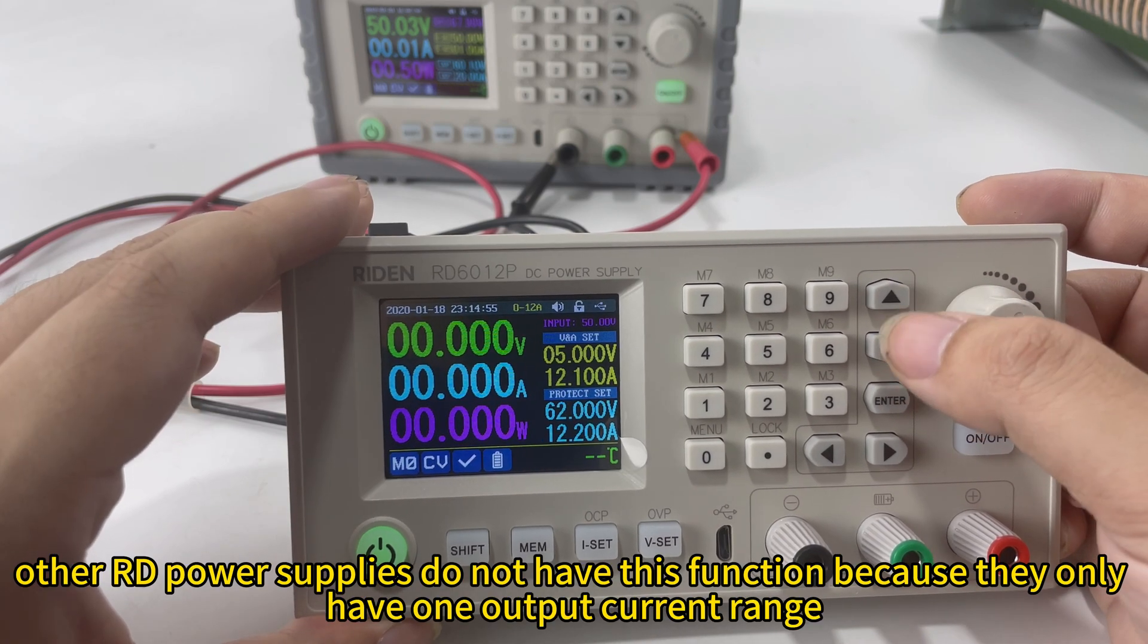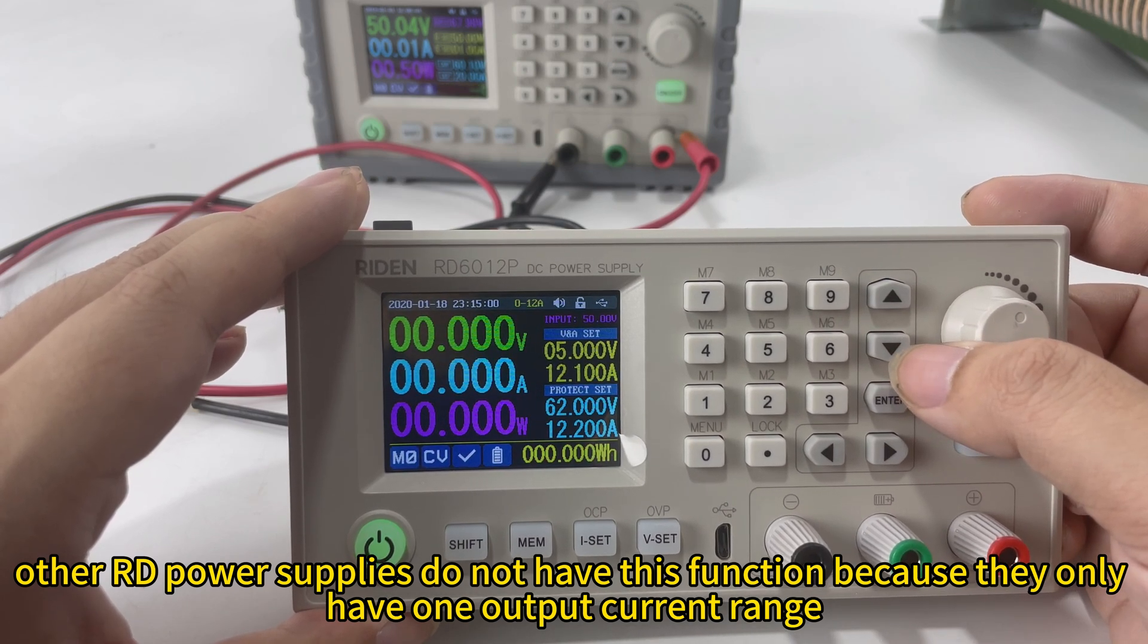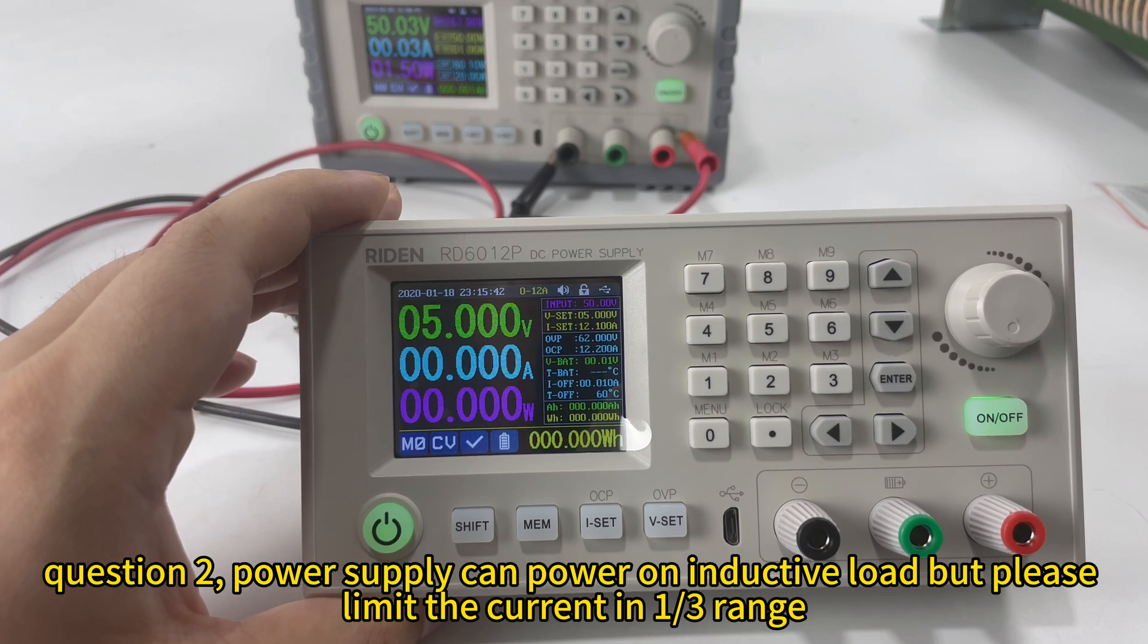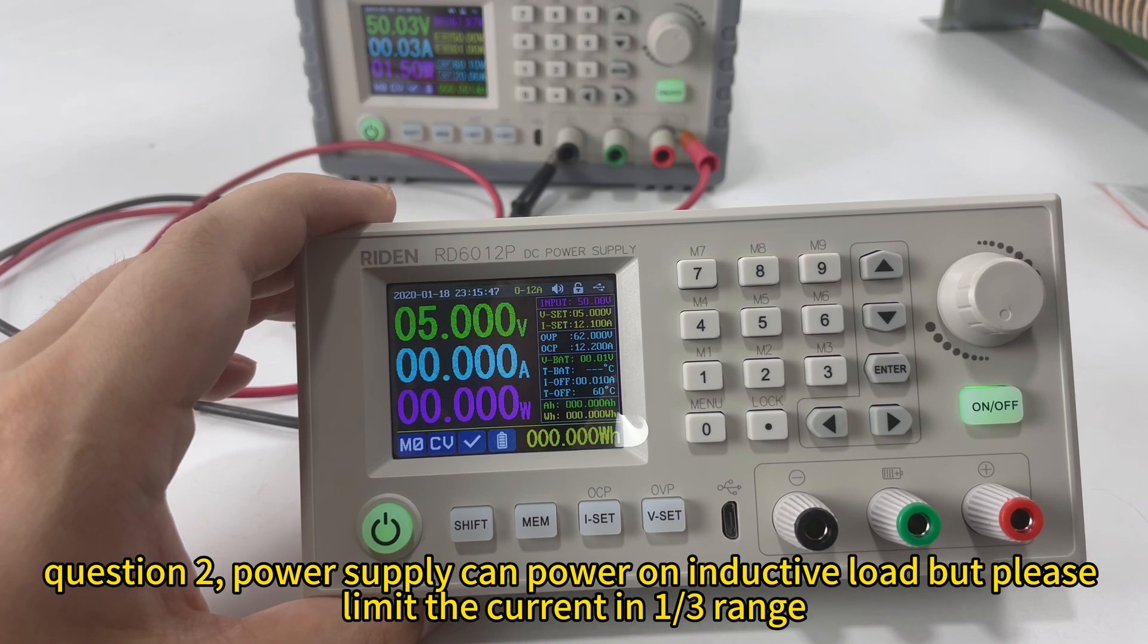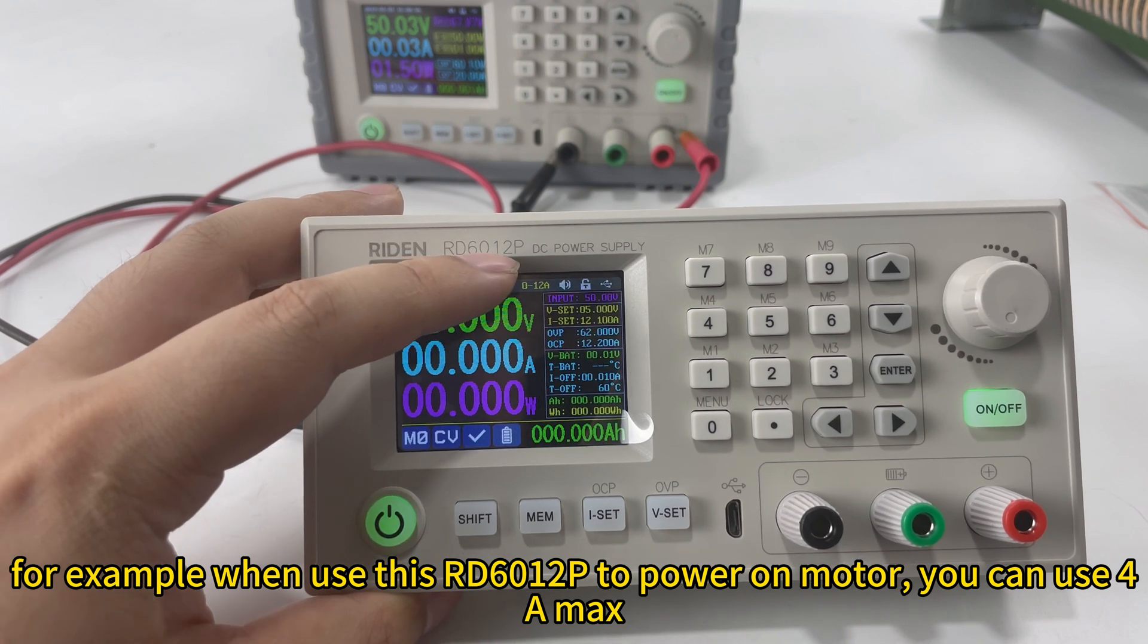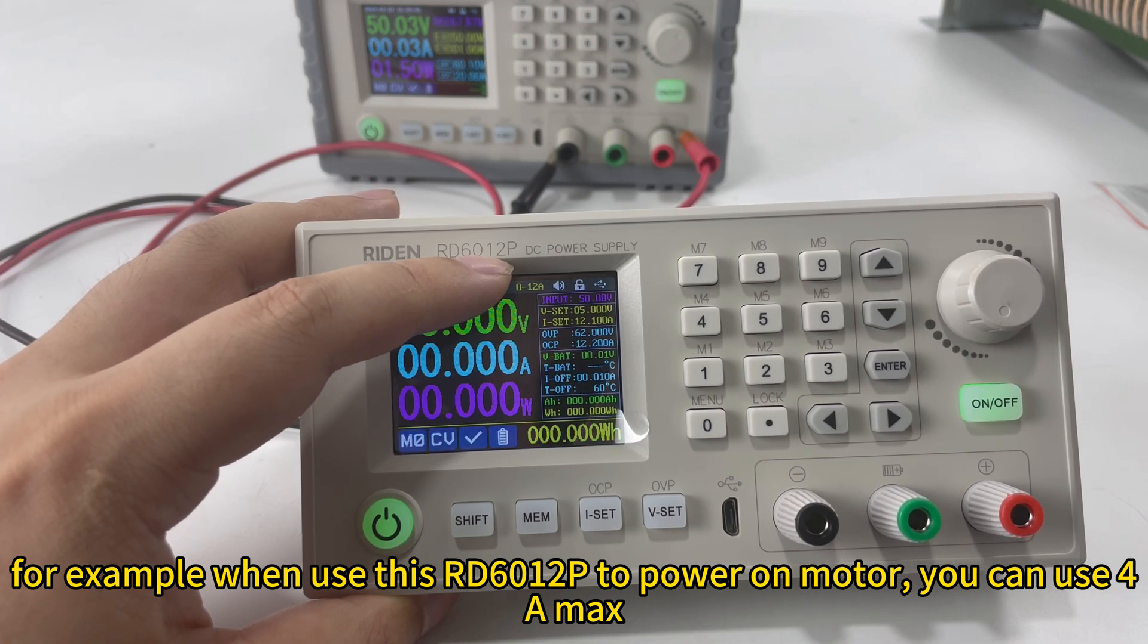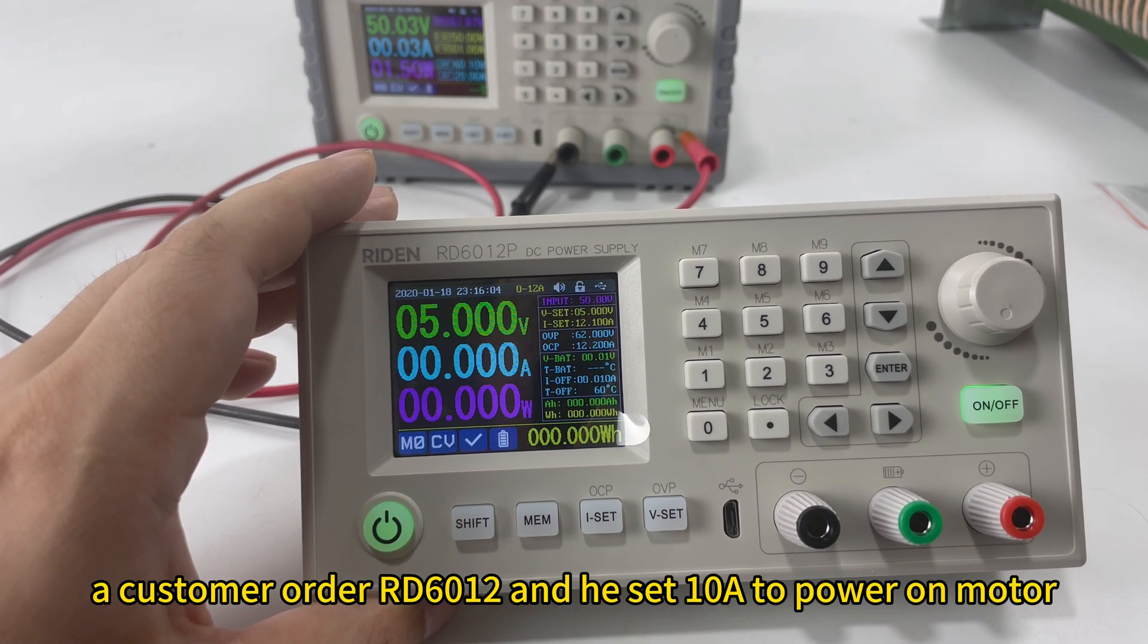Other RD power supplies do not have this function because they only have one output current range. The second question is that our power supply can connect inductive loads like a motor. But you need to notice that you need to limit the current to one third range. For example, this RD62RP.